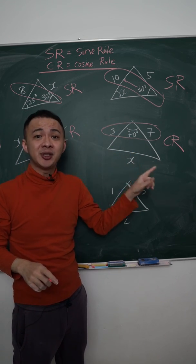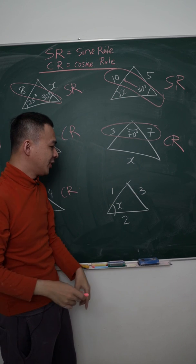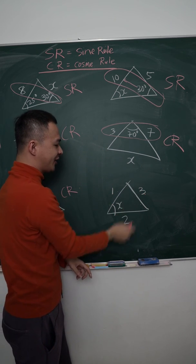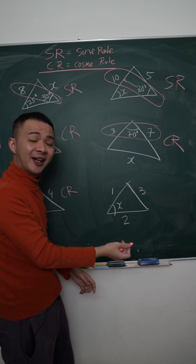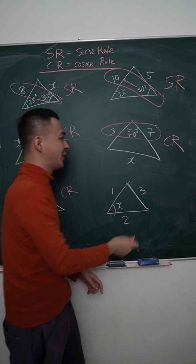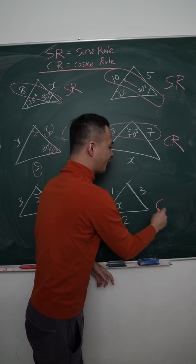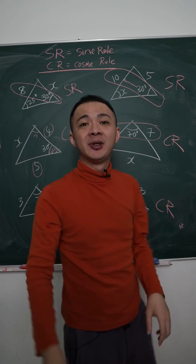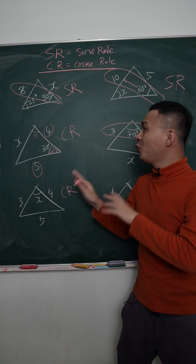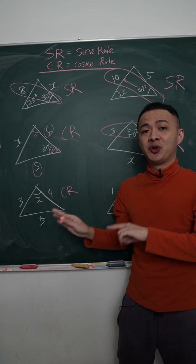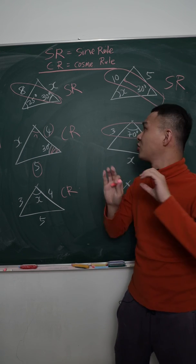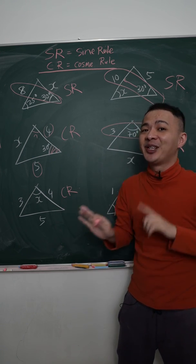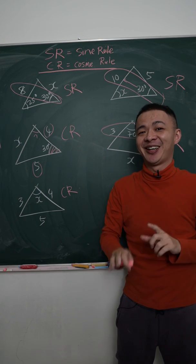The last triangle: three sides without any angle given, and I need to find the angle — use the second formula of the cosine rule. Understanding which formula to use is very important in the solution of triangles topic. I hope you find this video helpful.